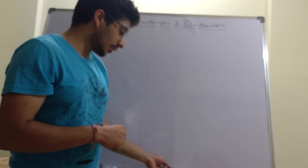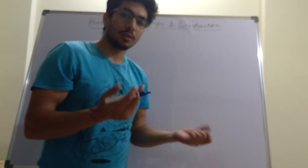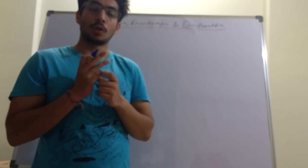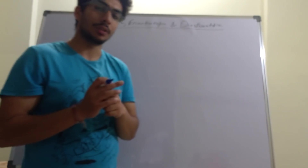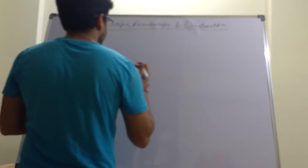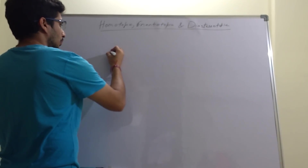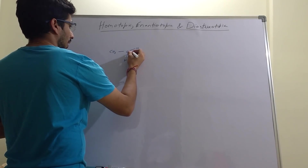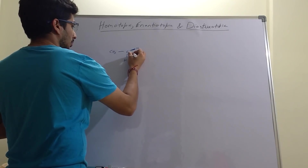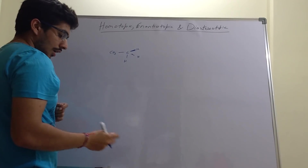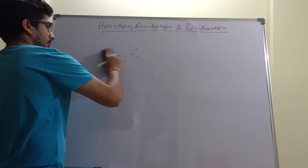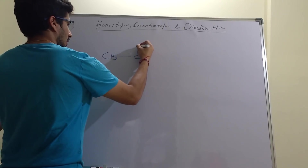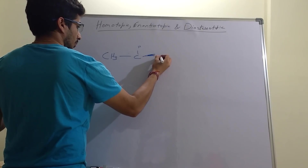Let's begin. First, let's see how to find out whether a compound has homotopic, diastereotopic, or enantiotopic protons. There's a very simple method. Let's take ethane — we have a CH3 group. Let's say one hydrogen is above the plane and one hydrogen is below the plane.